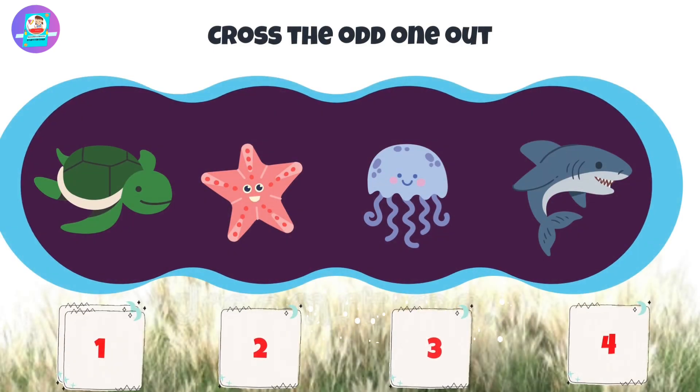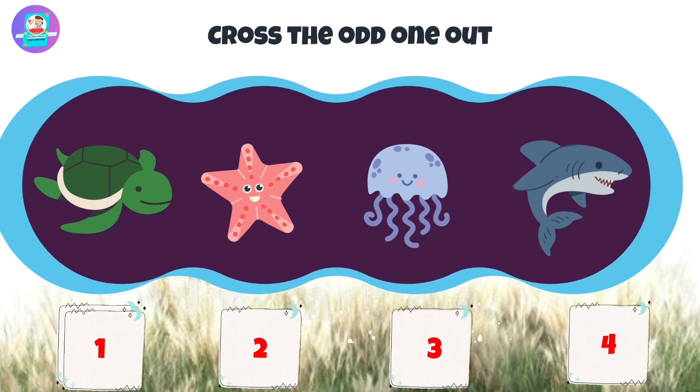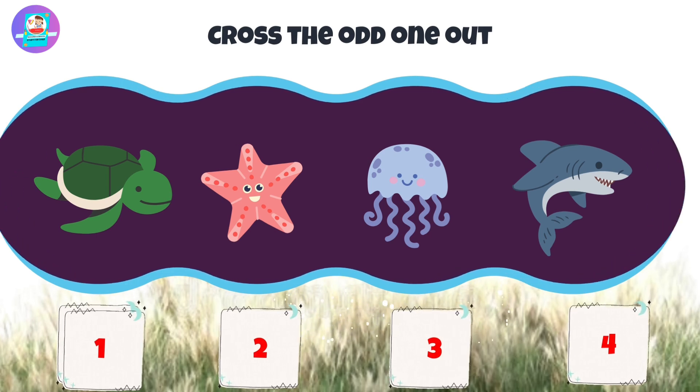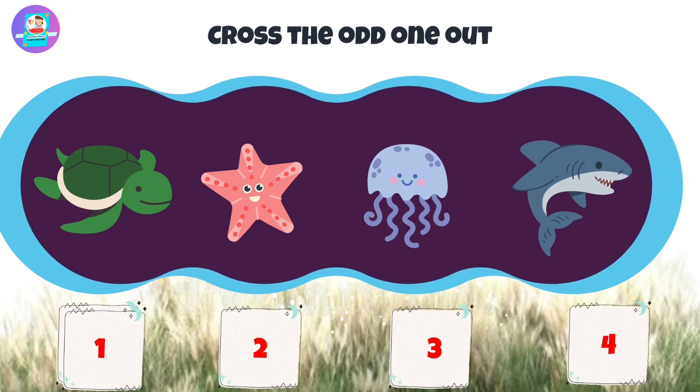Next, there are 4 pictures: 1, 2, 3, 4. Put the odd one out.